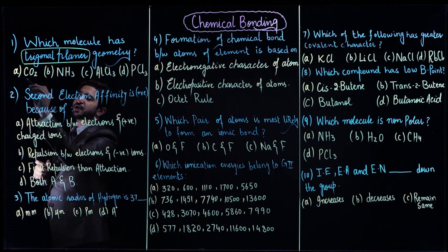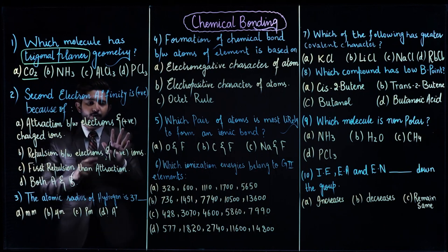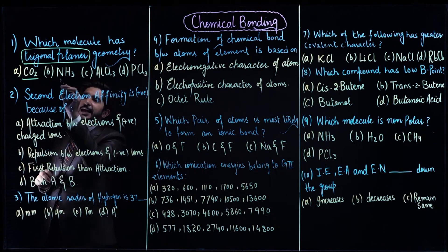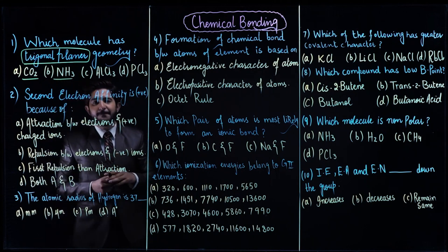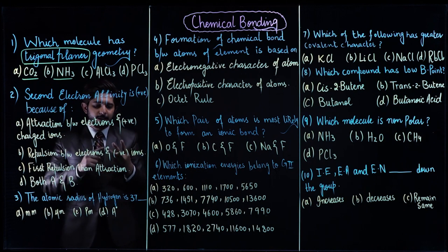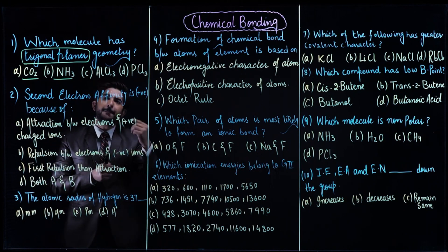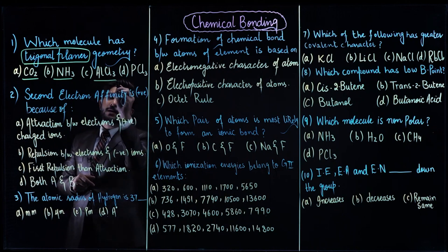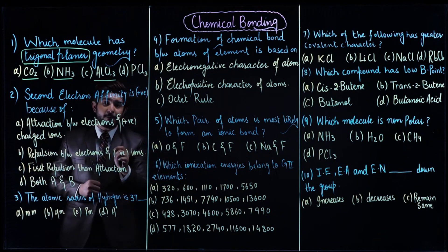Carbon dioxide is linear in shape — it is an AB2 type molecule. NH3: nitrogen has five electrons, so it makes three bonds and has one lone pair, making it an AB4 type molecule. AlCl3: aluminum belongs from group number 3, so it has three bond pairs and zero lone pairs — this is an AB3 type molecule.